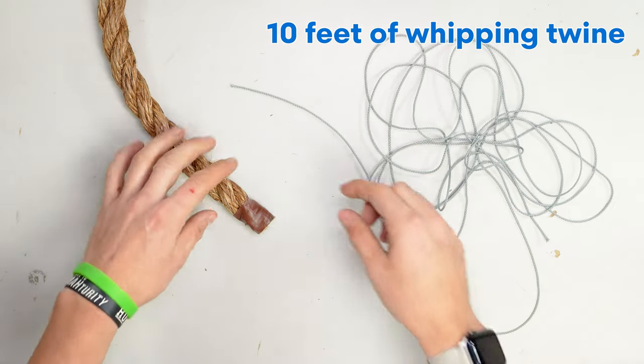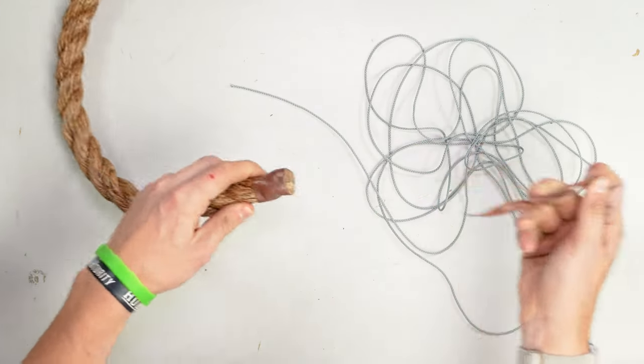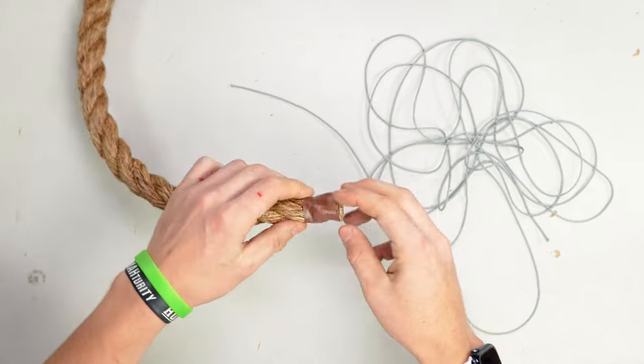Start by cutting around 10 feet of your whipping twine and then remove the tape from the end of your rope.